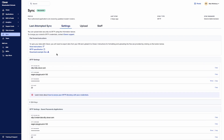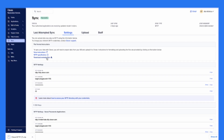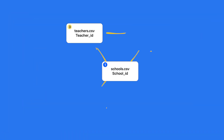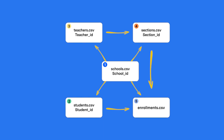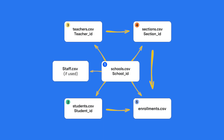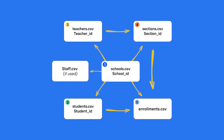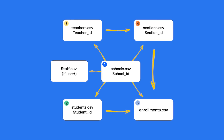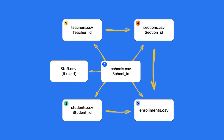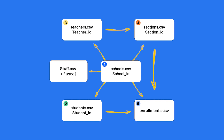Remember, this video is for those who have chosen the SFTP sync type. When you're first setting up your sync, you must upload all five files at once, since they interact together to build your Clever data sync. We're going to walk you through all five files over the next few videos.